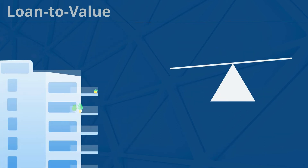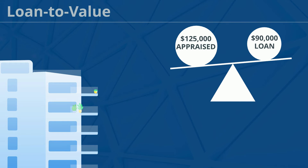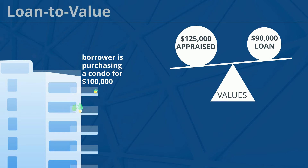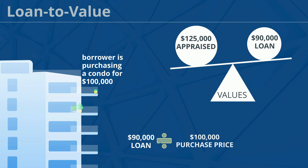Here we're going to compare the $90,000 loan amount to the $125,000 appraised value and determine the values. Since the purchase price is the lower, it will give us the highest percentage of LTV, so we're going to use that number. The loan amount is $90,000 divided by the purchase price of $100,000, so the loan-to-value is 90%.